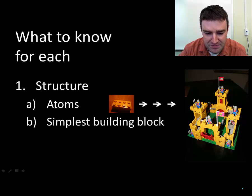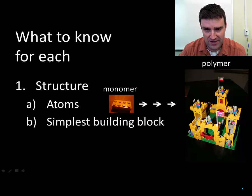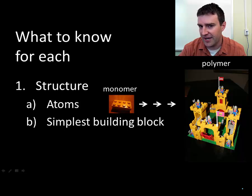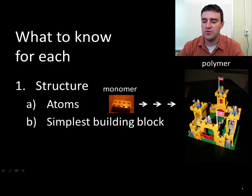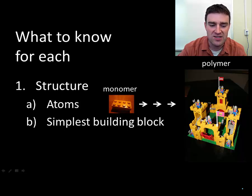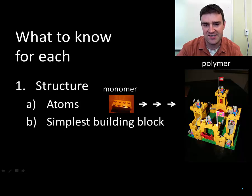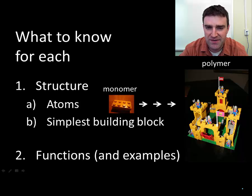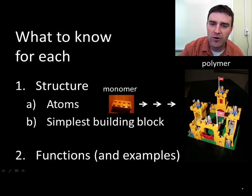Lots of these biomolecules have some version of this Lego block, and those can be combined to make much larger versions. The fancy terms are monomer — mono means one — and polymer — poly means many, like a polygon has many sides. You can combine monomers to make polymers. Carbohydrates, proteins, and nucleic acids all have different monomers. I also want you to be able to describe some functions: what the molecule actually does and its purpose within the cell, plus some example molecules.